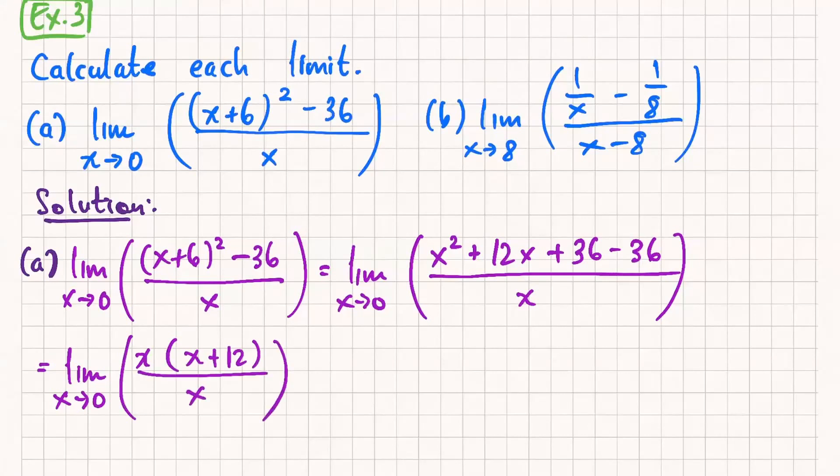x is not equal to 0, so I'm allowed to cancel out. And then I'm left with x plus 12. That's a polynomial, direct substitution property. So I plug in x equals 0. I get 0 plus 12. My final answer is 12, done.